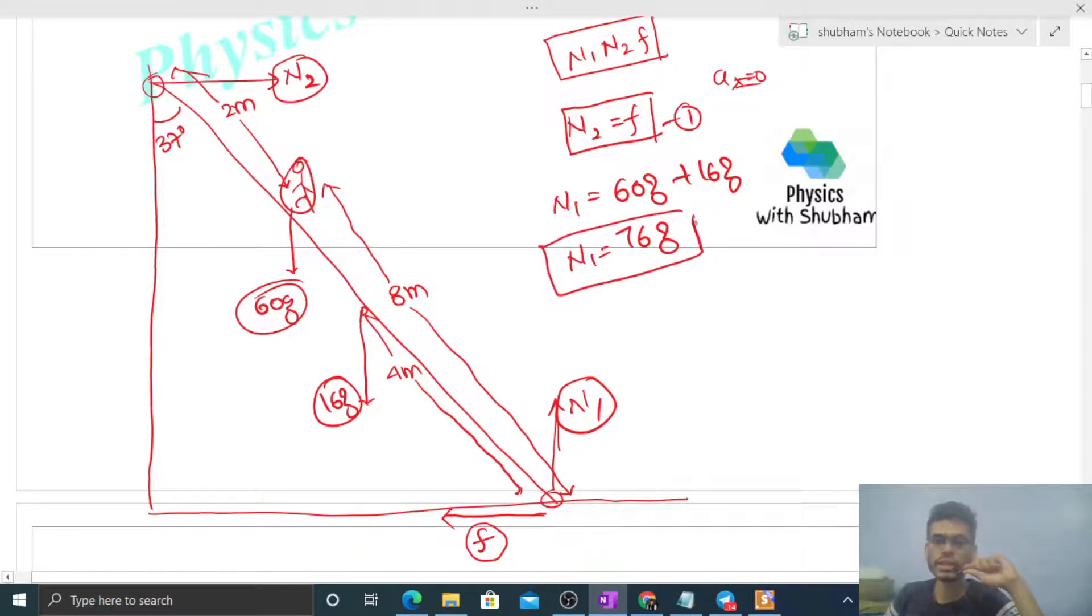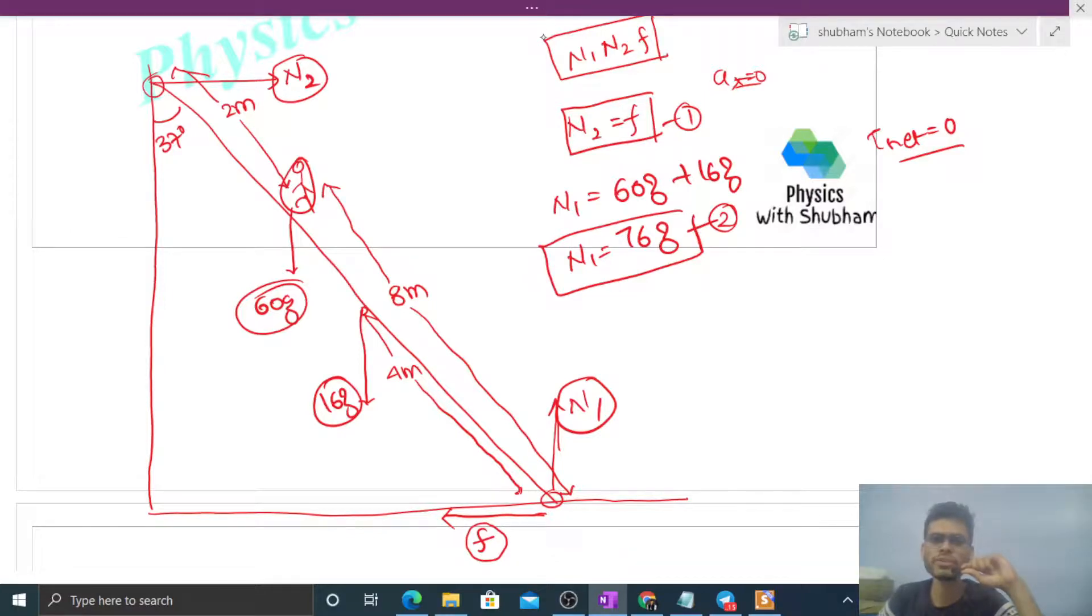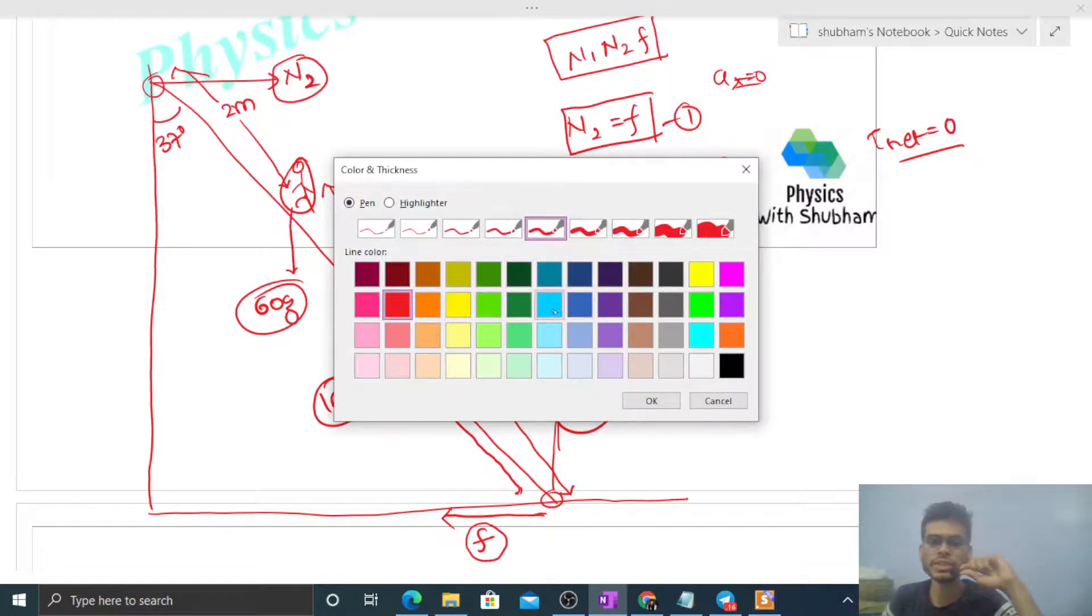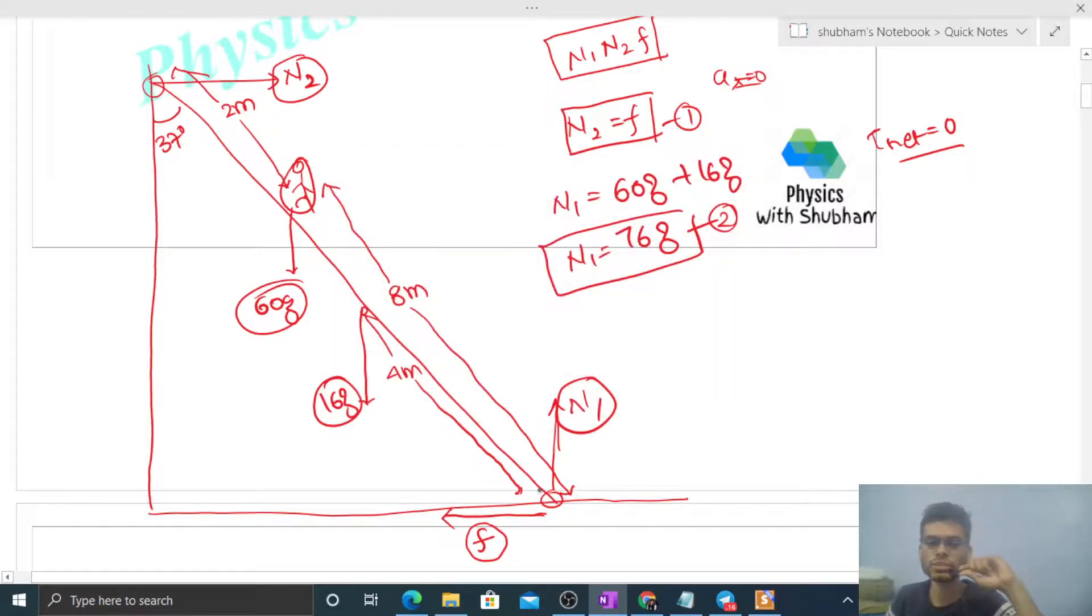Now where will we write the third equation from? Third equation will be simply from net torque is equal to zero, because this ladder is also in rotational equilibrium. This ladder is not rotating, so net torque on this ladder will be zero. Now we write torque about an axis. So about which axis will net torque be zero? You can choose any axis. You can write net torque equals zero about that axis. So we can write multiple equations by changing axis. Let's choose any one axis. Let's say this bottom most point of the ladder which is in contact with the ground. This is my axis.